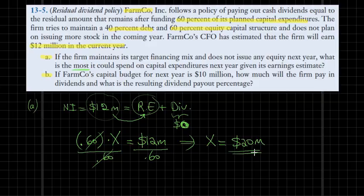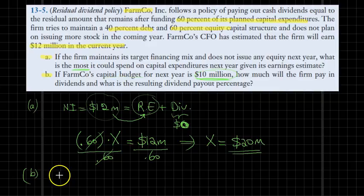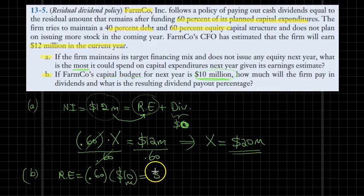In part B, we are told that the firm's capital budget for the next year is 10 million dollars. Of that, 60% will be financed through retained earnings. Therefore, the size of retained earnings equals 60% of the planned capital budget of 10 million dollars, which equals 6 million dollars.